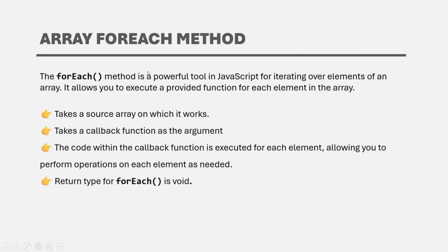In summary, forEach is used to loop over each element of a source array and executes a callback function for each iteration. It works on an array, takes a callback as an argument, and allows you to perform operations on each element as required. Its return type is void — it does not return any value. I hope you now understand what forEach is and what it's used for. Thank you for listening and have a great day.